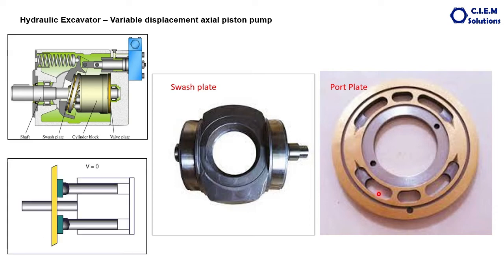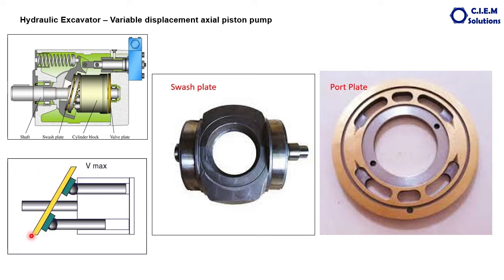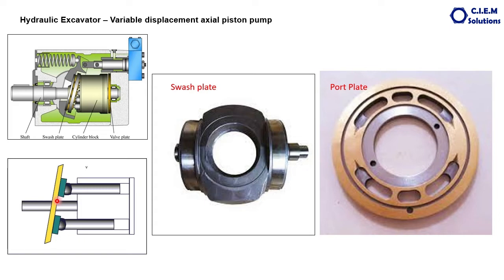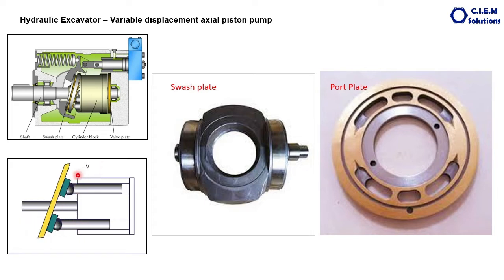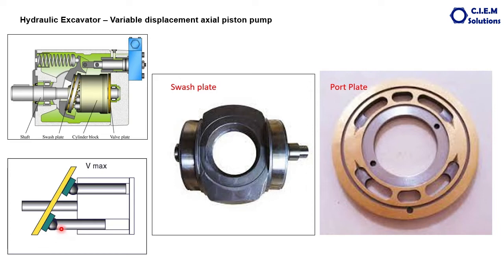How does the swash plate work? The pistons are placed on it through slippers. The change in angle between the two planes is done by the servo piston or governor. You can see in this animation: this is maximum flow with maximum angle. The flow is reduced at minimum angle, and further reduced until the angle is zero, at which point the flow will be zero.